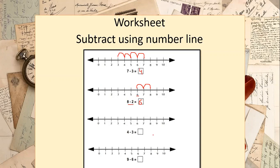Next: 4 minus 3. We start from 4 and move backward 3 steps — to 3, then 2, then 1. We are now on position 1. So 4 minus 3 equals 1.